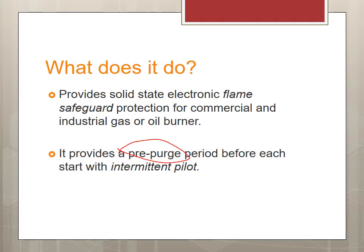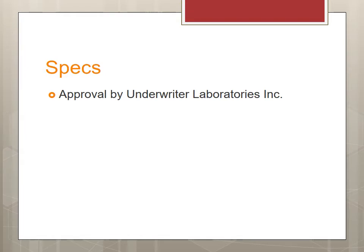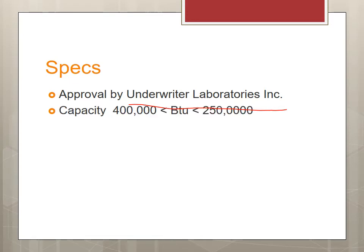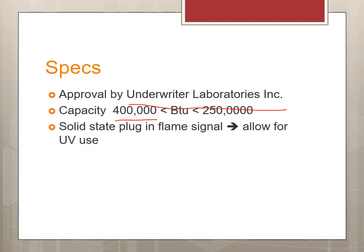The pilot is intermittent — not continuous. With a constant pilot, once we light the pilot we keep the power on and turn off the ignition. The specification is approved by Underwriters Laboratories. The BTU limit is between 4,000 and 400,000 BTUs. For above a quarter million BTUs, we need a different kind of control.